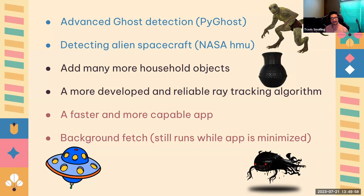Future work also includes fine-tuning the ray tracking algorithm and making the app faster. Currently there are minor latency issues because images are sent to a server hosted through Python, which is inherently slow. The last thing we wanted to add is background fetch, so the app could run in the background and vibrate in your hand to let you know you're about to walk into something.